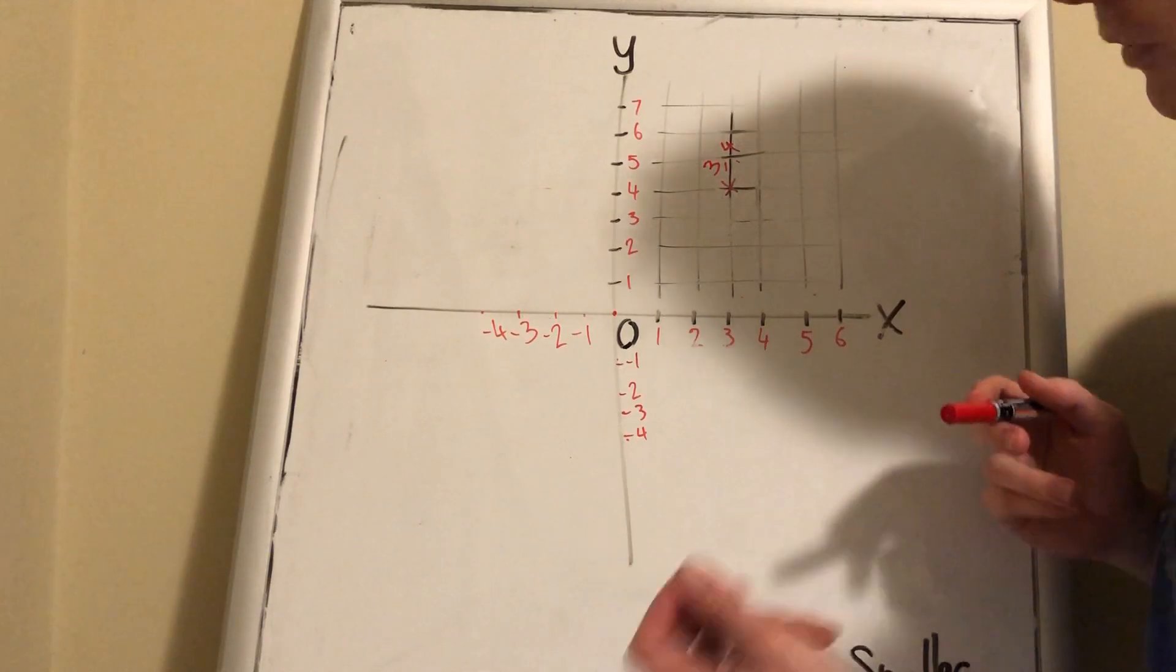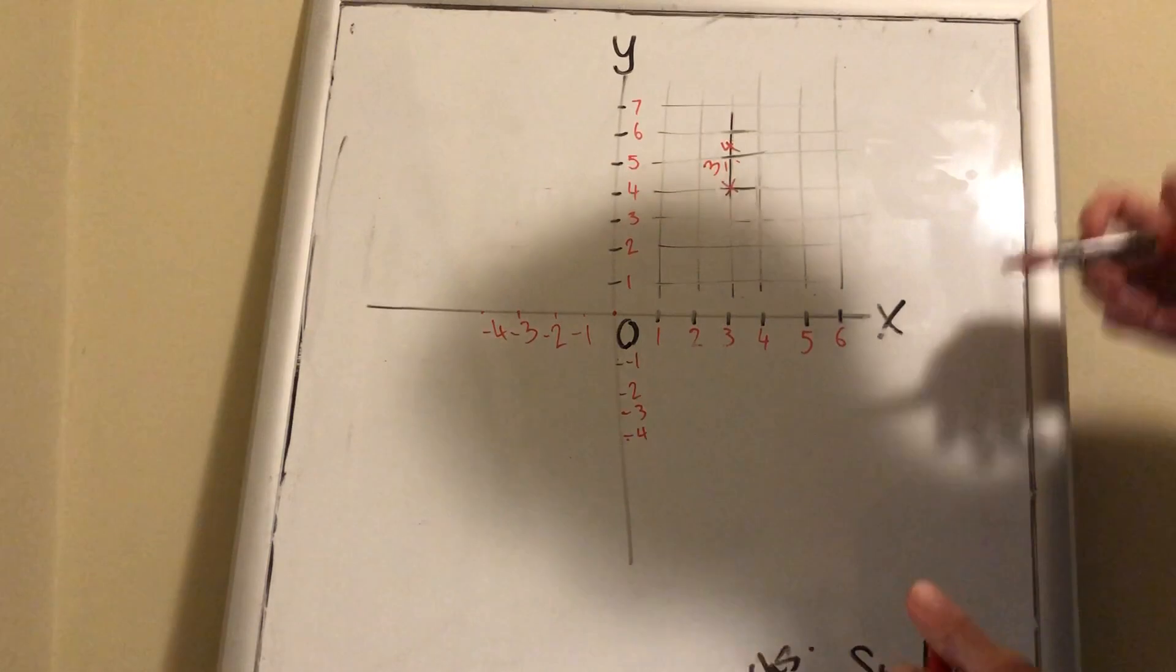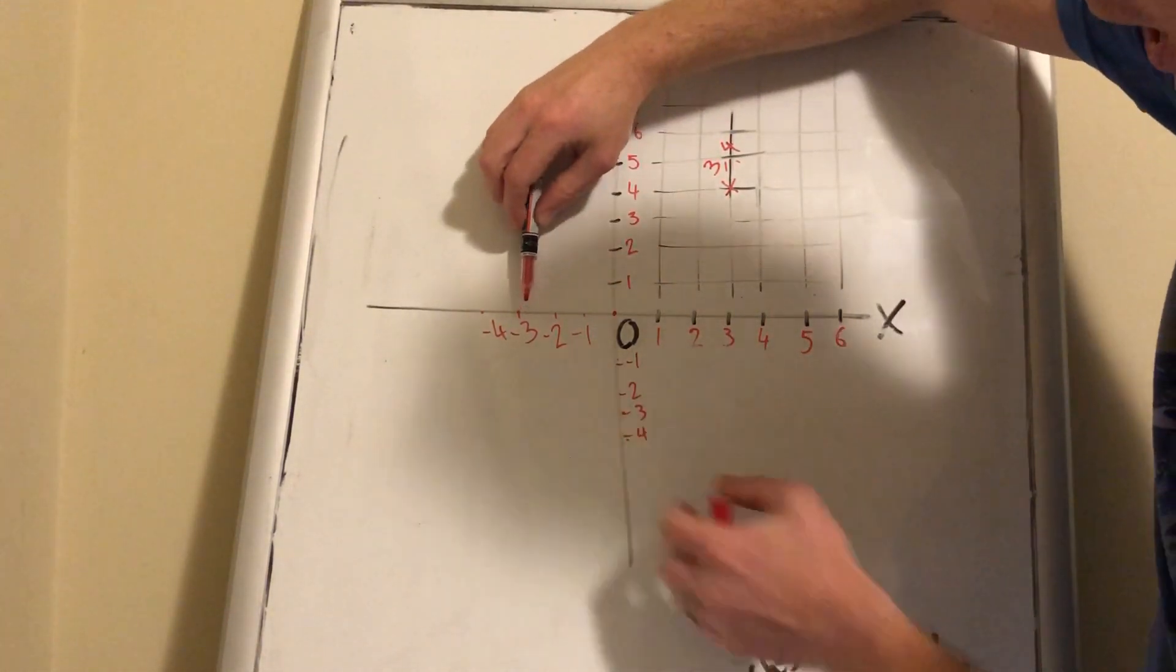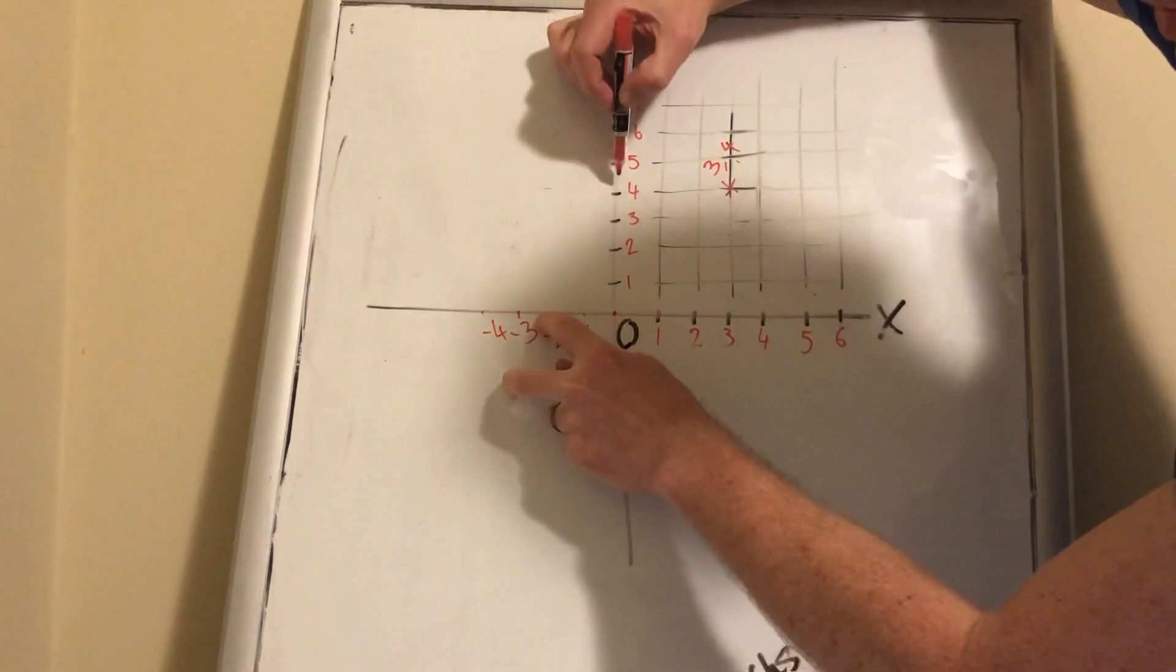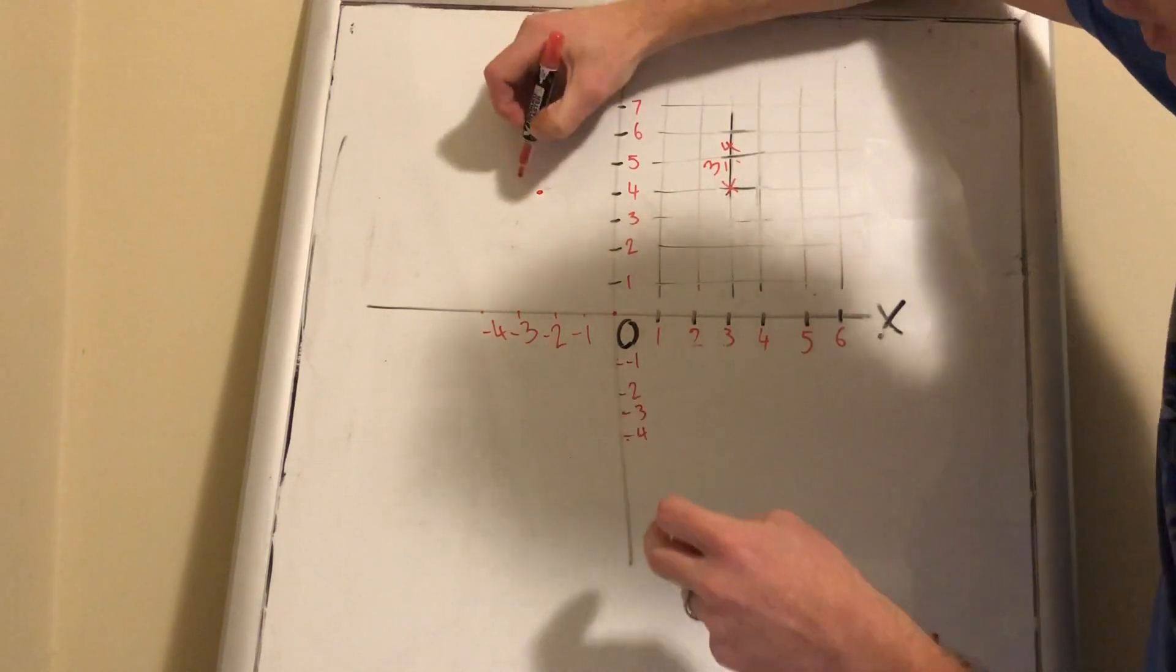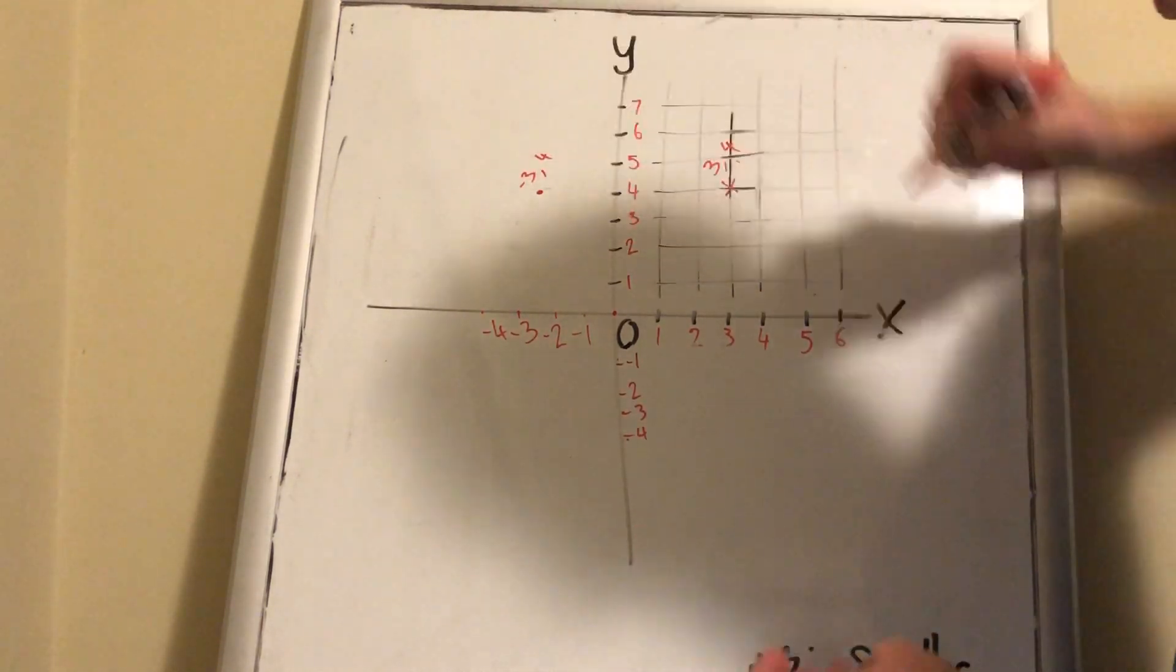Now, if I'm looking for location negative 3, 4: first the x-axis, negative 3, so I'm here. Then I need to go to 4, which is here. So negative 3, 4 is this point. I'll mark it the same way: negative 3, 4.